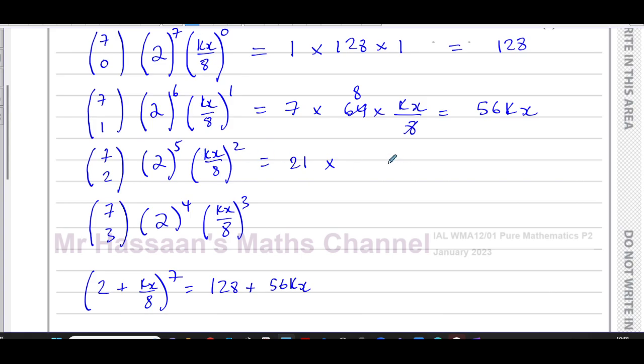So this to the power five is 32 times, now this is all squared. So every term is squared, you're going to have k squared, x squared, and eight squared, which is 64. 32 and 64, that goes into two times. So we get 21 over two times k squared x squared. So that's the next term, 21 over two k squared x squared.